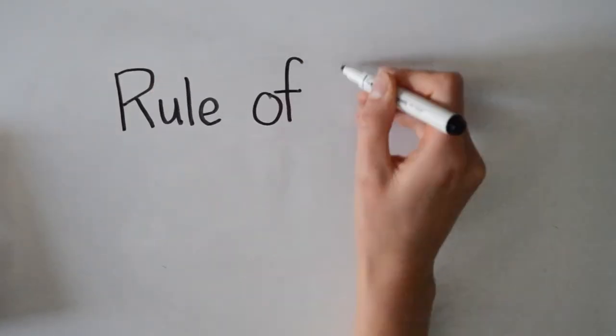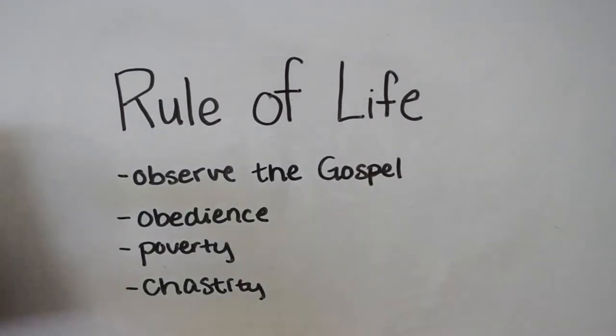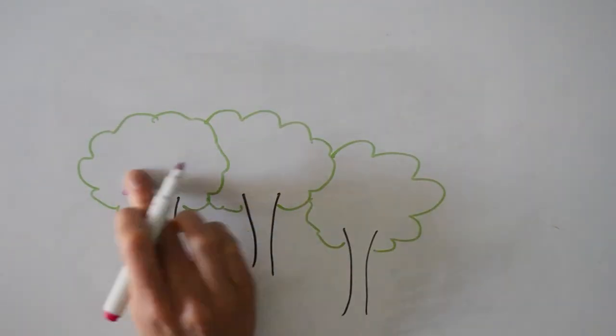The rule of life is to observe the holy gospel of our Lord Jesus Christ by living in obedience, without anything of one's own, and in chastity. He had a deep love for nature and included all of God's creation in his brotherhood.